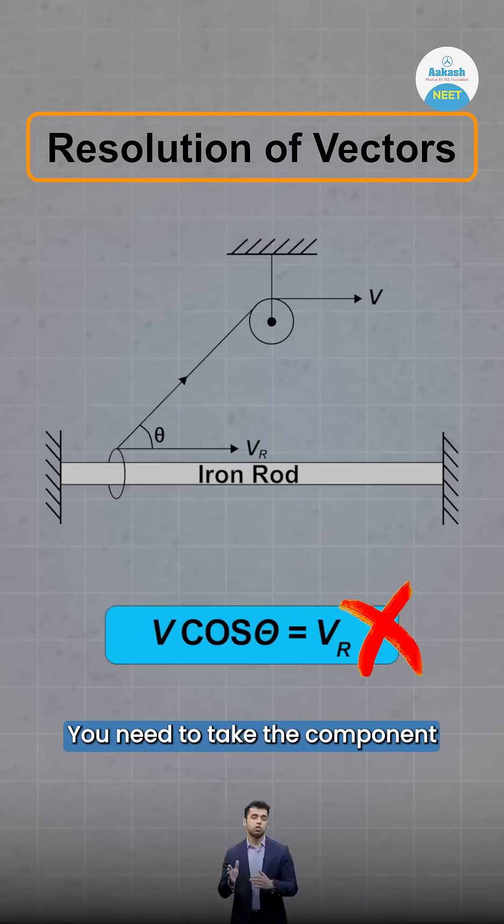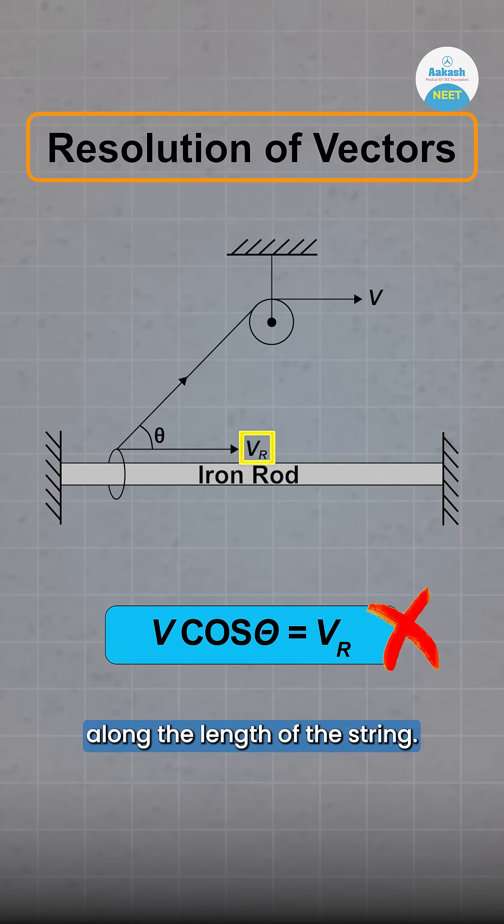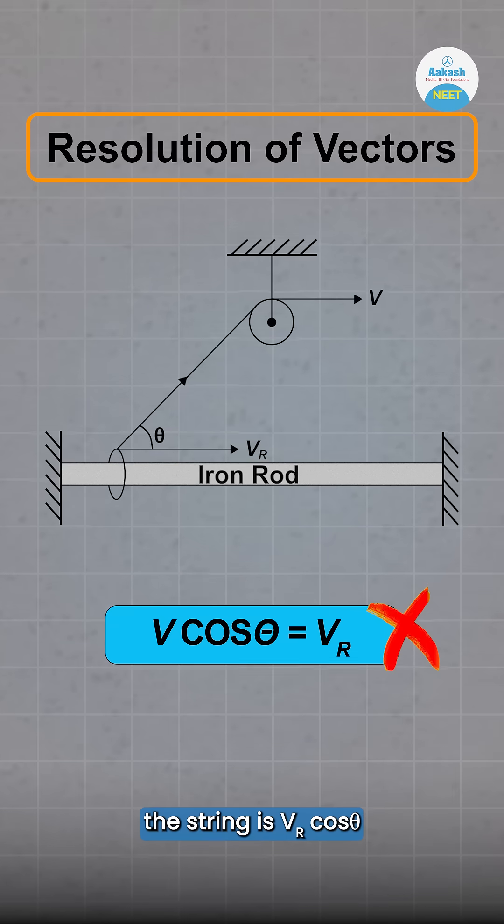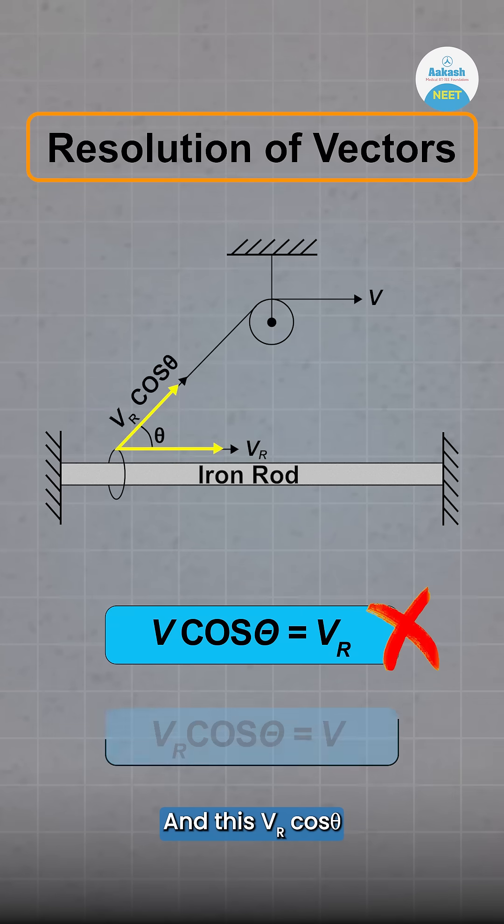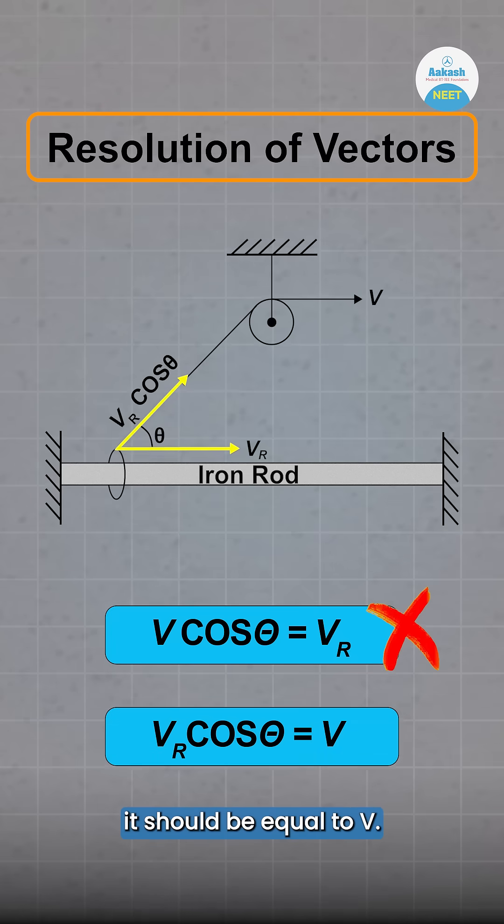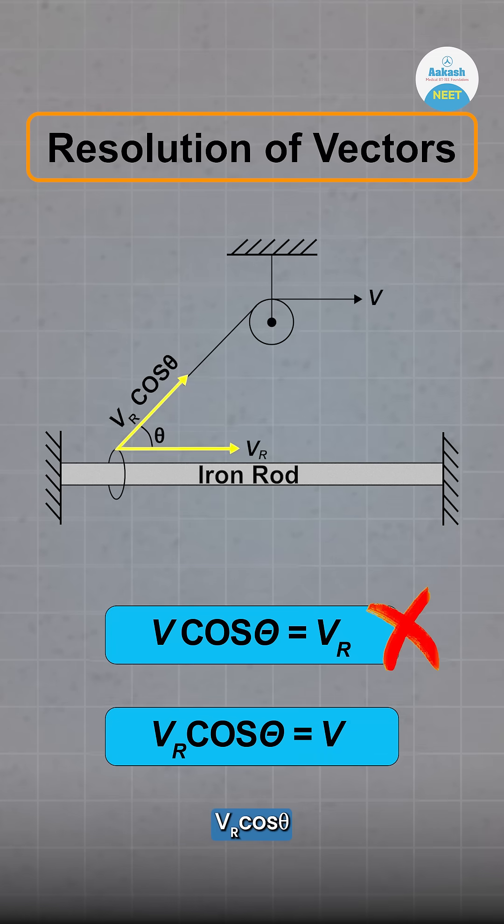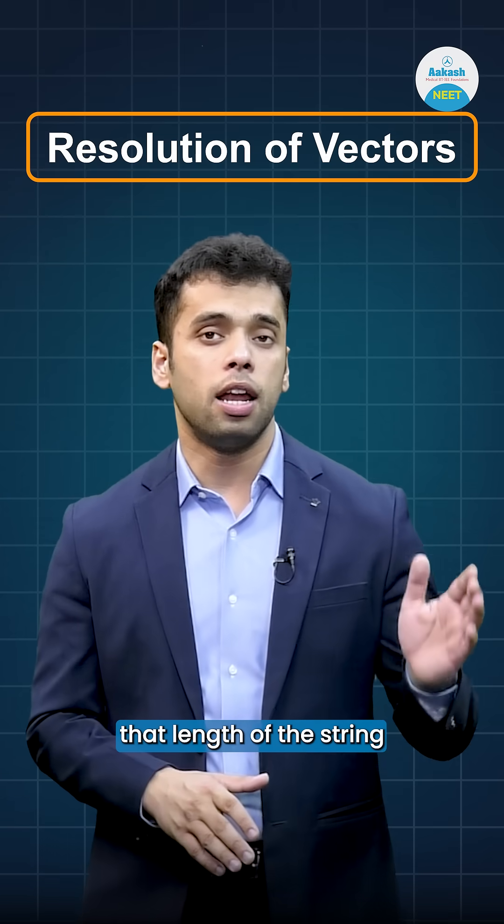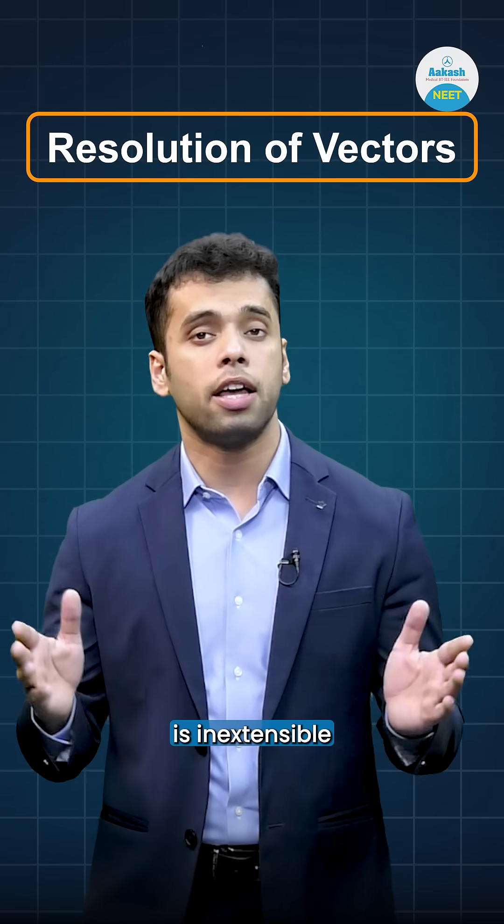You need to take the component of vr along the length of the string. So the component of vr along the length of the string is vr cos θ, and this vr cos θ should be equal to v. So the correct equation is vr cos θ equals v, based on the concept that the length of the string is inextensible.